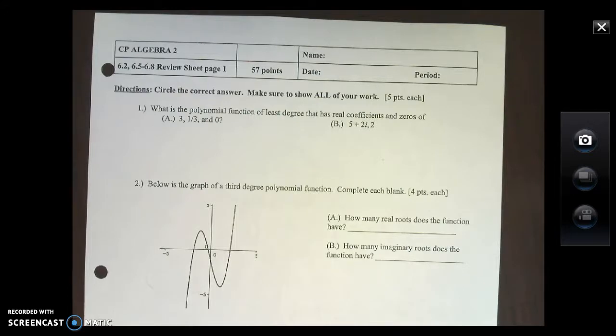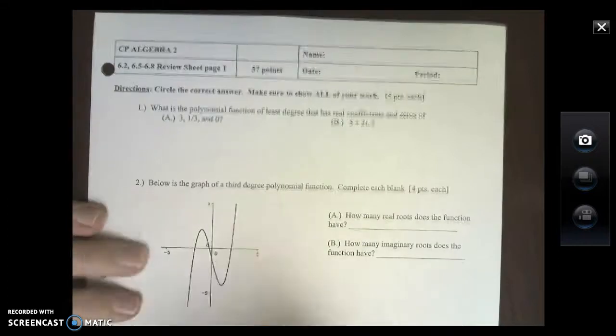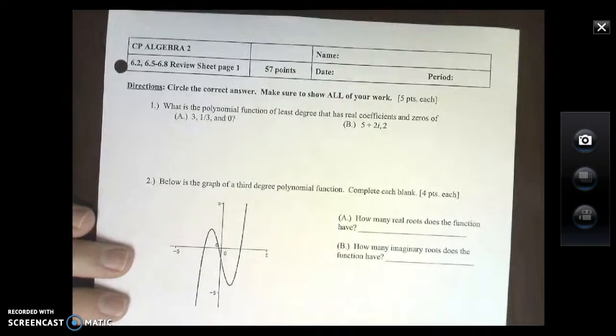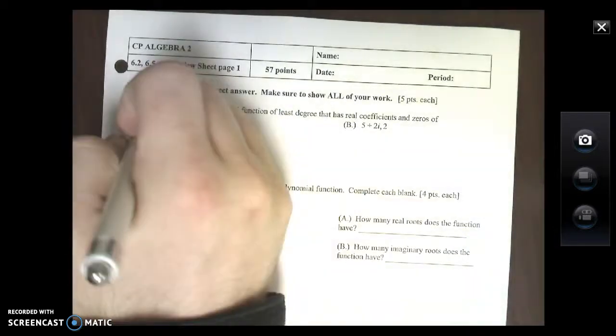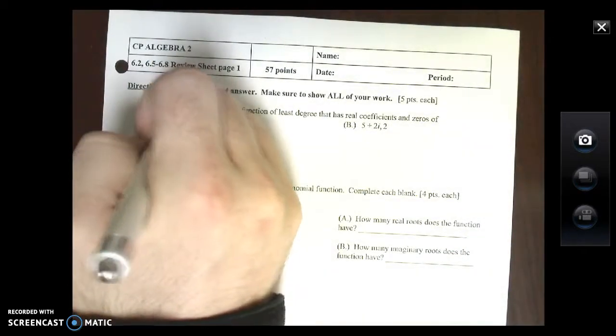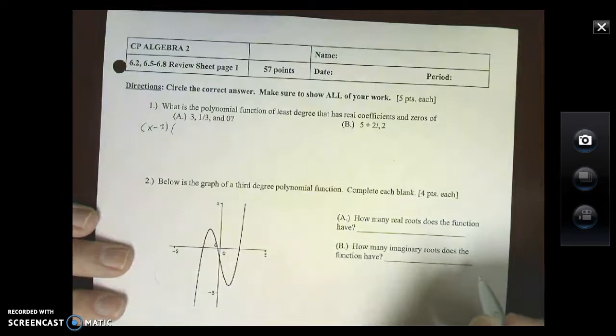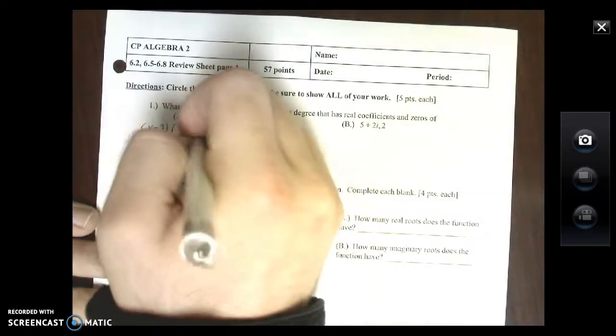Write the polynomial function of least degree that has real coefficients and zeros of the following. For the first one I have 3, 1/3, and 0. So what I've got here is X minus 3, I have X minus 1/3, and then I just have an X.